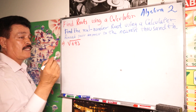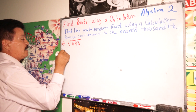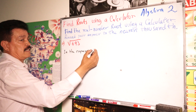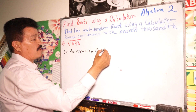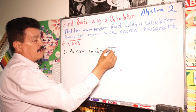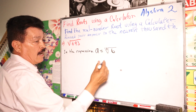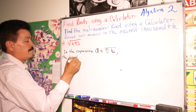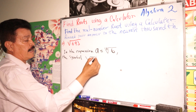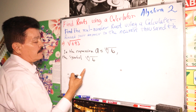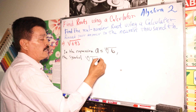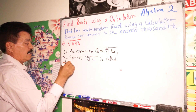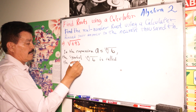Before we solve this problem, remember this expression. In expression A, look at this — very important, in this formula. The symbol, the radical N of B, is called the radical.